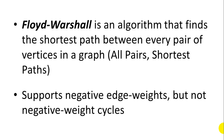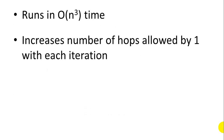It supports negative edge weights, but not negative weight cycles. It runs in big O of n cubed time. That sounds pretty slow, but it does a lot of work — it finds a lot of shortest distances. In a large graph with many pairs, it finds the distance between all of them. It works by increasing the number of hops allowed by one with each iteration.